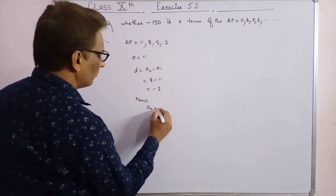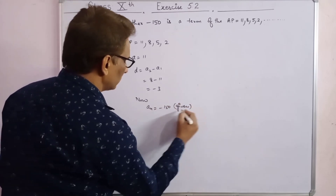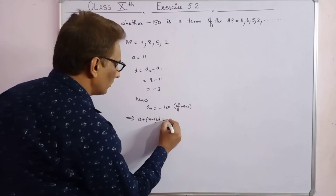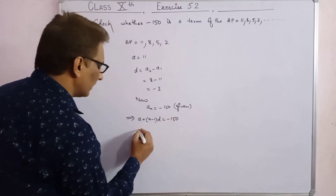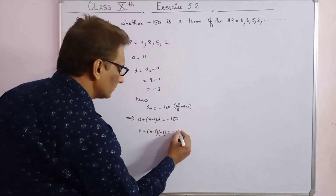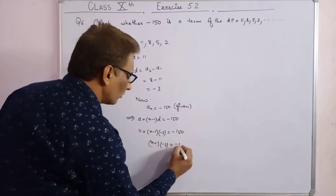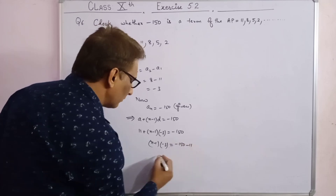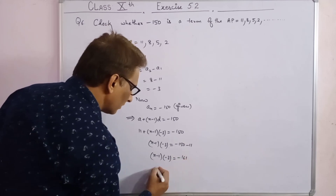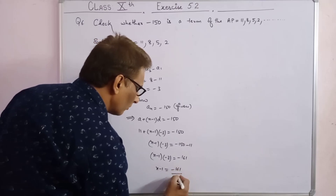Assume An equals minus 150. Using the formula: a plus (n minus 1) into d equals minus 150. Substituting: 11 plus (n minus 1) into (minus 3) equals minus 150. So (n minus 1) into (minus 3) equals minus 150 minus 11, which equals minus 161.